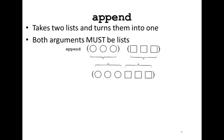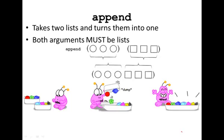We can also append two lists, which takes two lists and turns them into one, and both arguments must be lists. This is really important. Here's the CS Illustrated example. So we take the elements in these two lists, and we can join them, and then we get just one list left over.